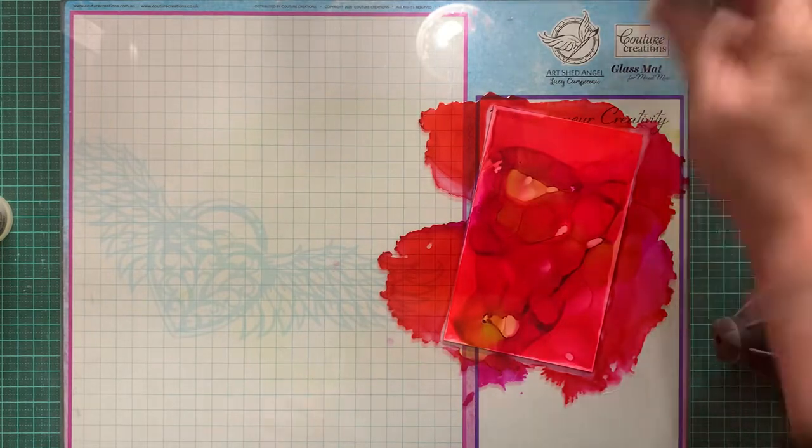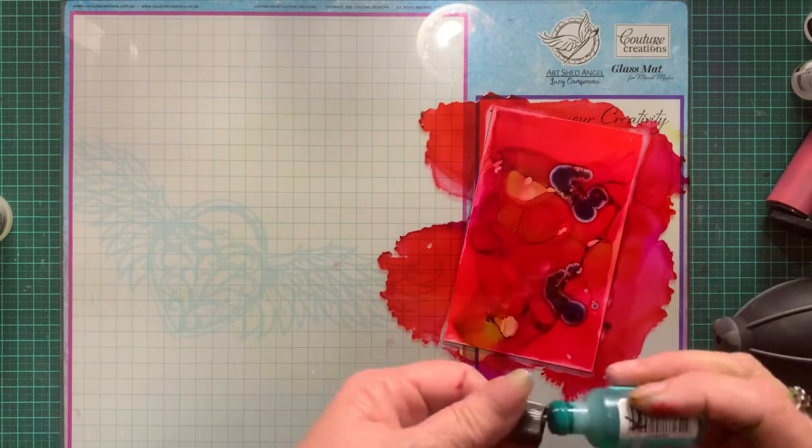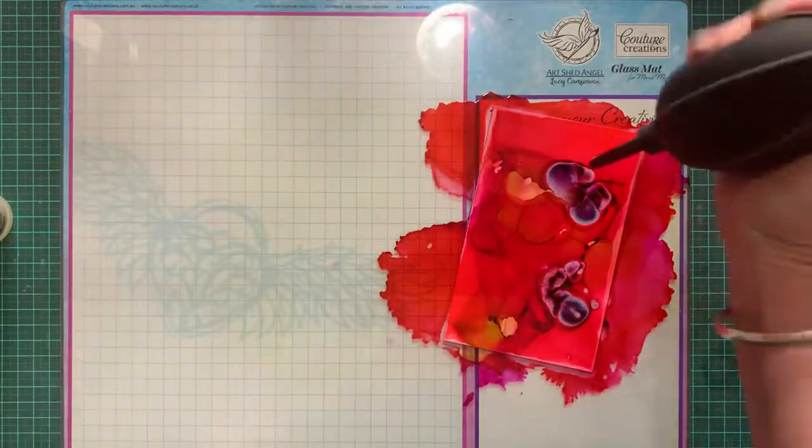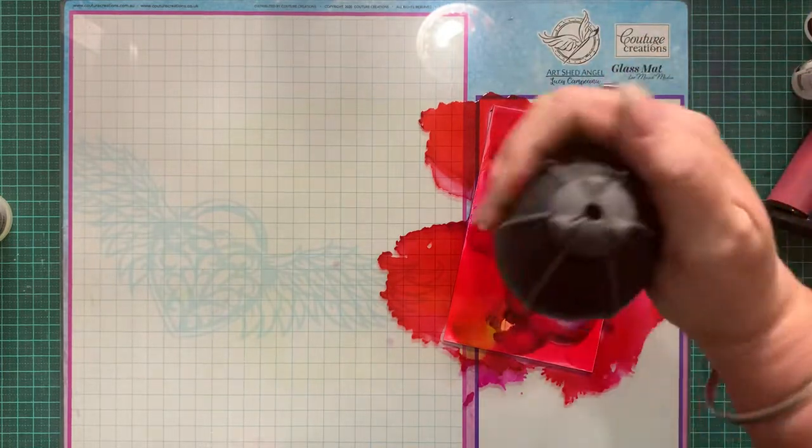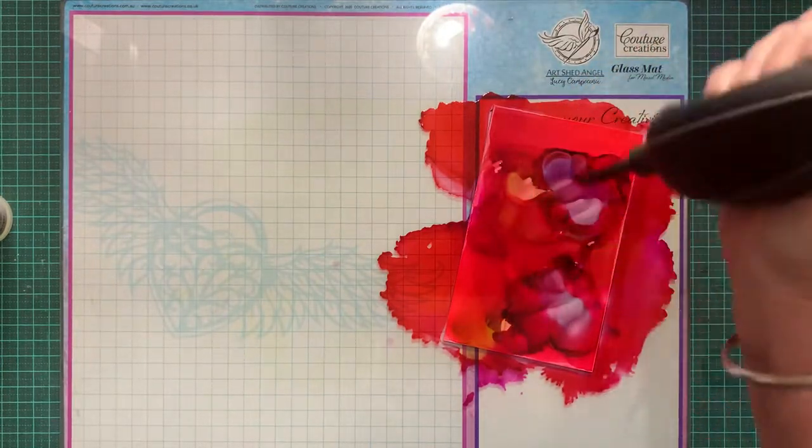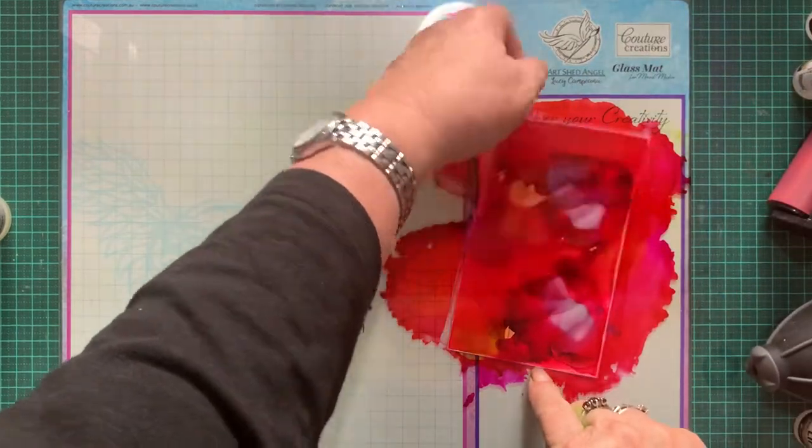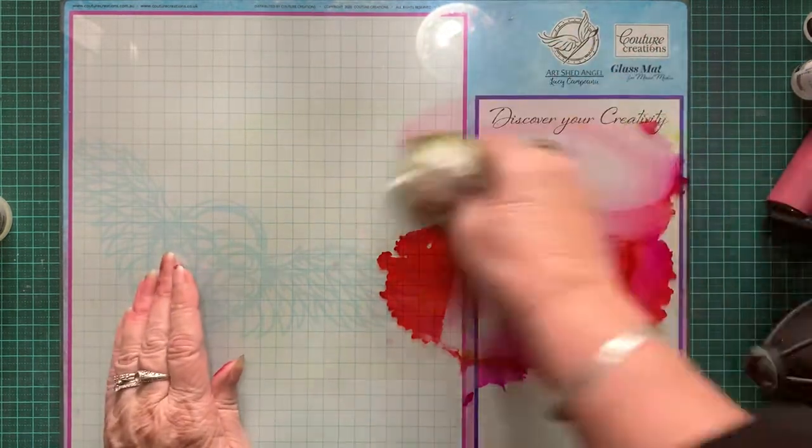If you're going to use the StazOn, you need to let it dry. It's not going to dry straight away, it will take quite a while for it to actually dry on the yupo paper because it's not absorbing the ink into the paper. Okay, that will do for now. We'll just leave that one. I'll just grab one of the ones that I did earlier because it'll be dry.